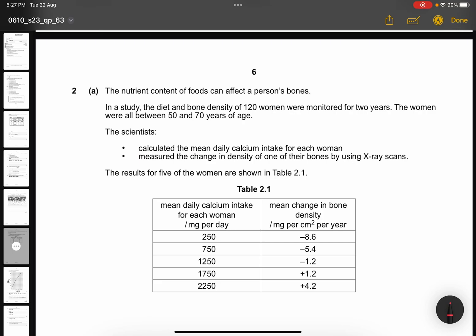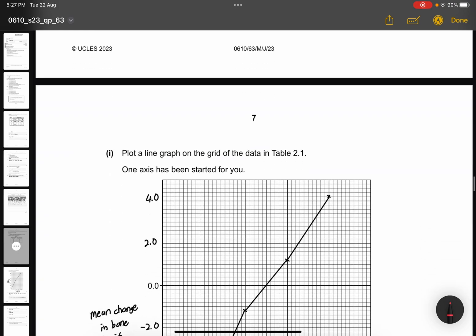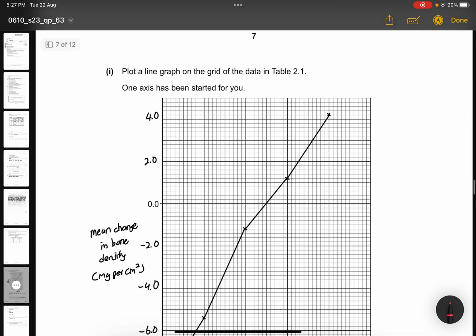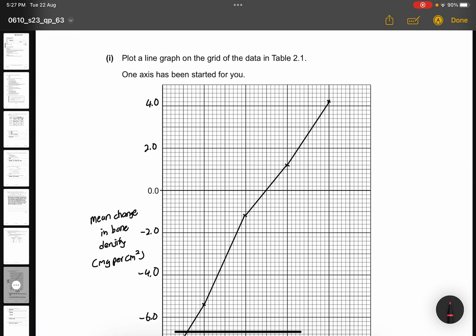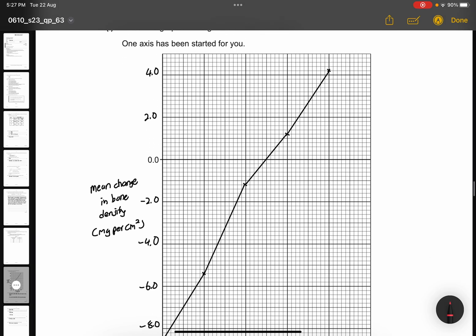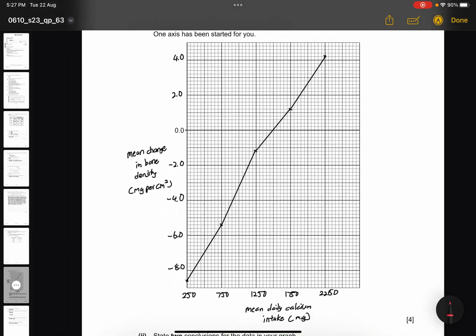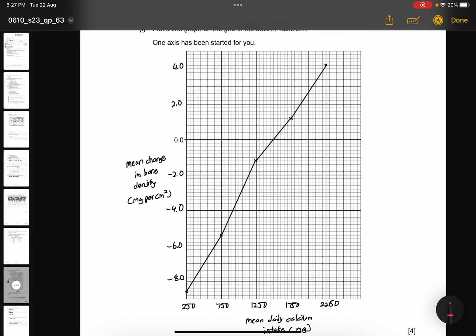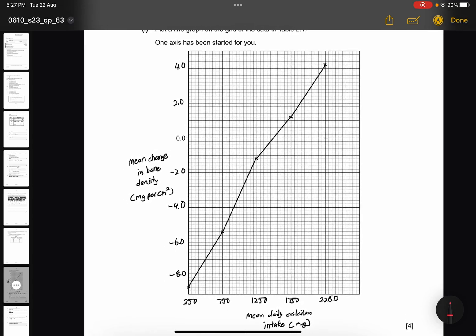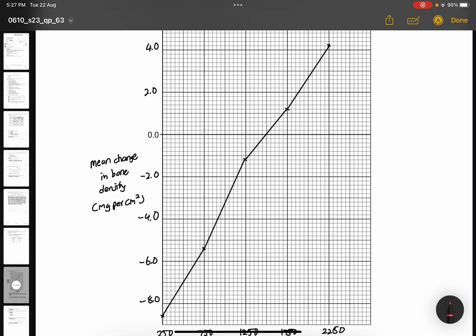The results for 5 of the women are shown in table 2.1. So, you have to plot a line graph on the grid of the data in table 2.1 and 1 axis has been started for you. So, just draw this graph. You can pause the video and have a look at this. Make sure your line is accurate and you make sure you're using a ruler to draw. And that's how you get your 4 marks. Make sure units are also part of the axis.